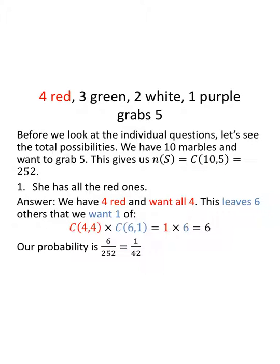The combinations of four things taken four at a time is one. The combinations of six items taken one at a time is six. One times six is six. And so, our probability is six out of 252, which we can simplify to be one out of 42. A one out of 42 chance that when we grab five at random, we have all the red ones.